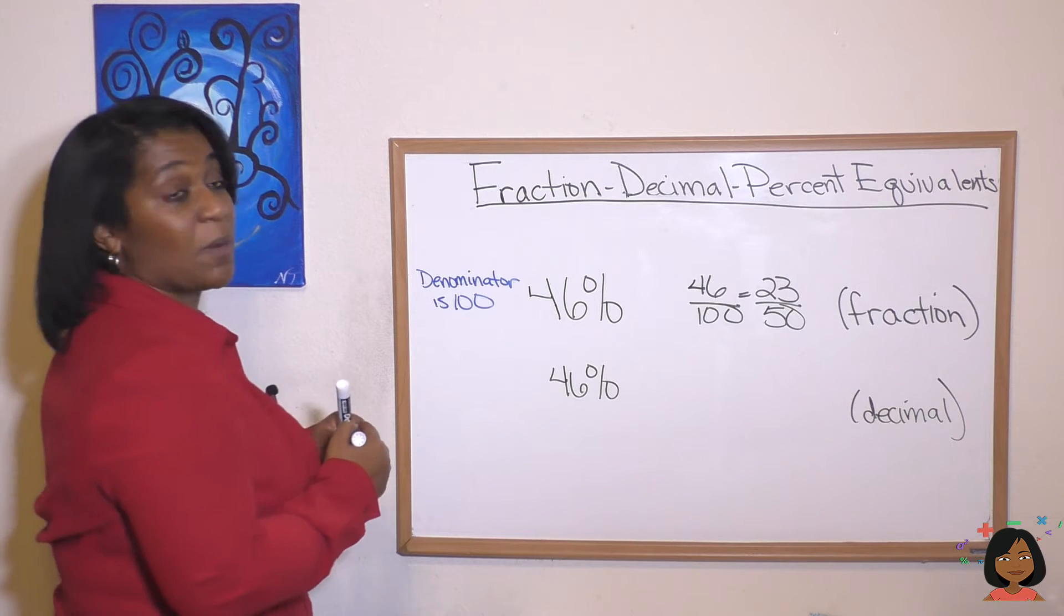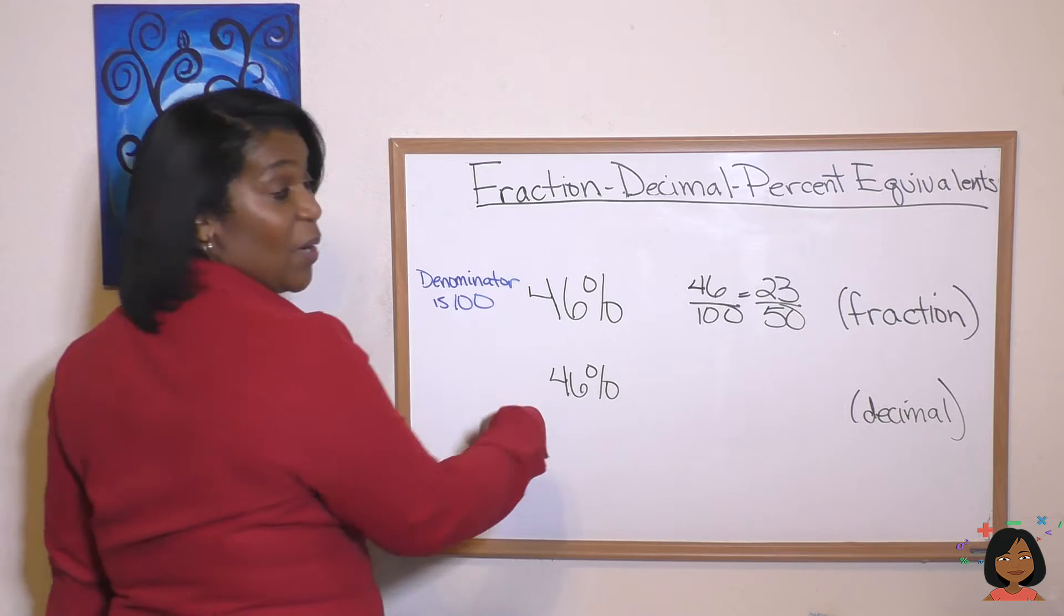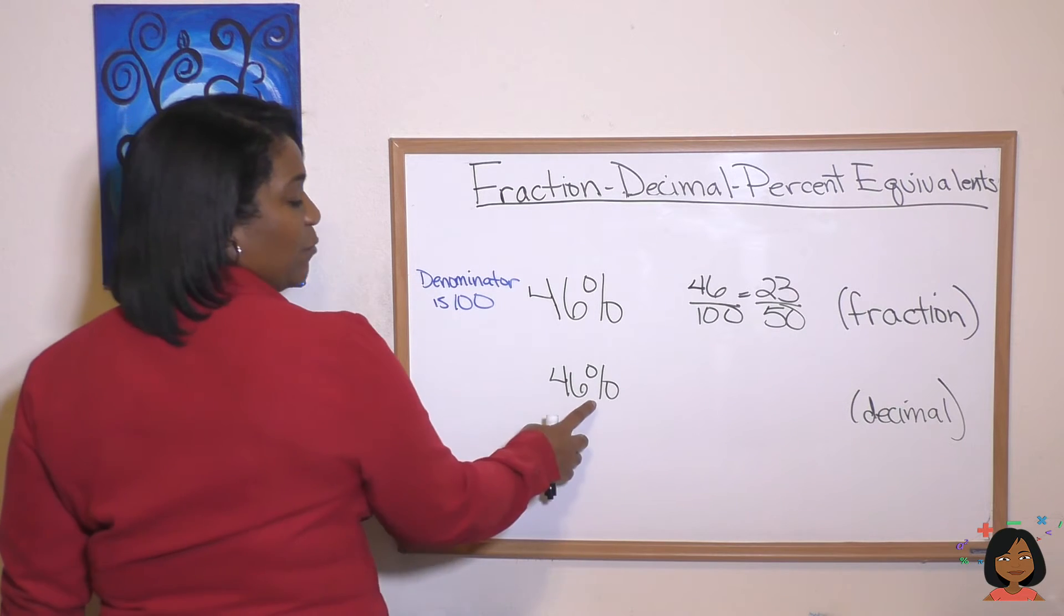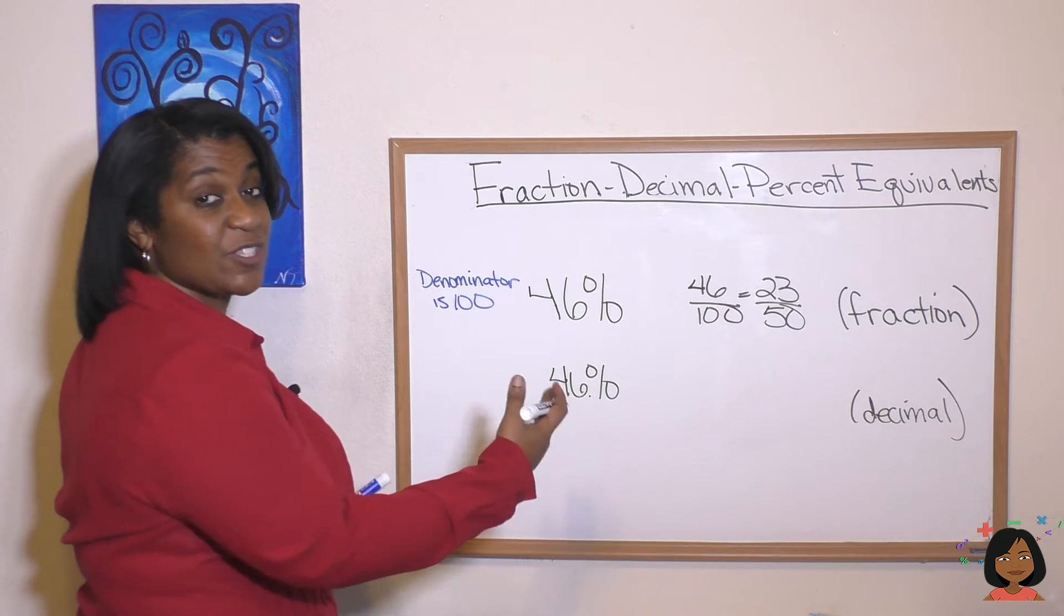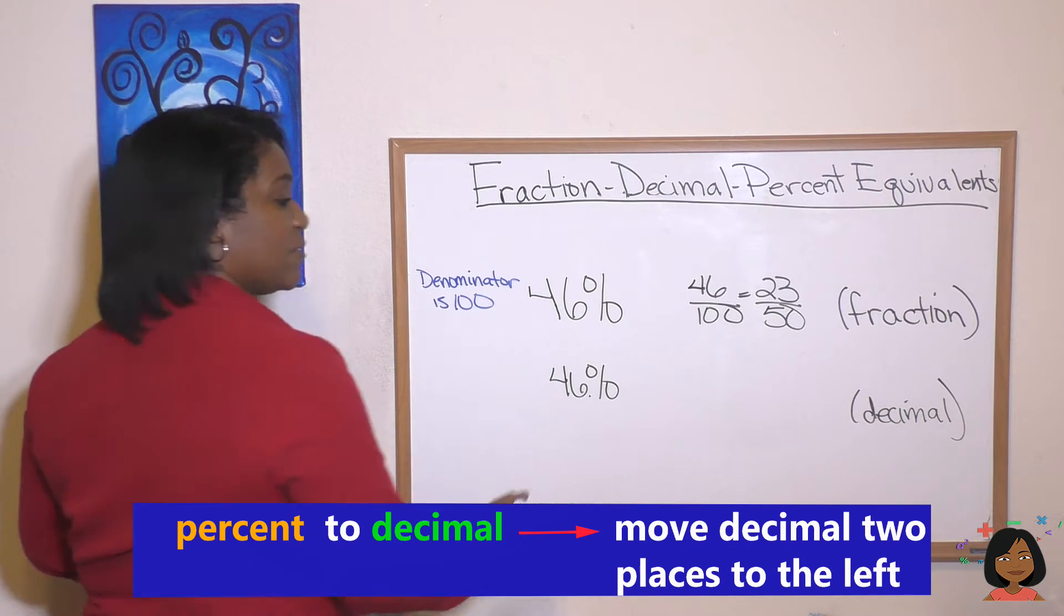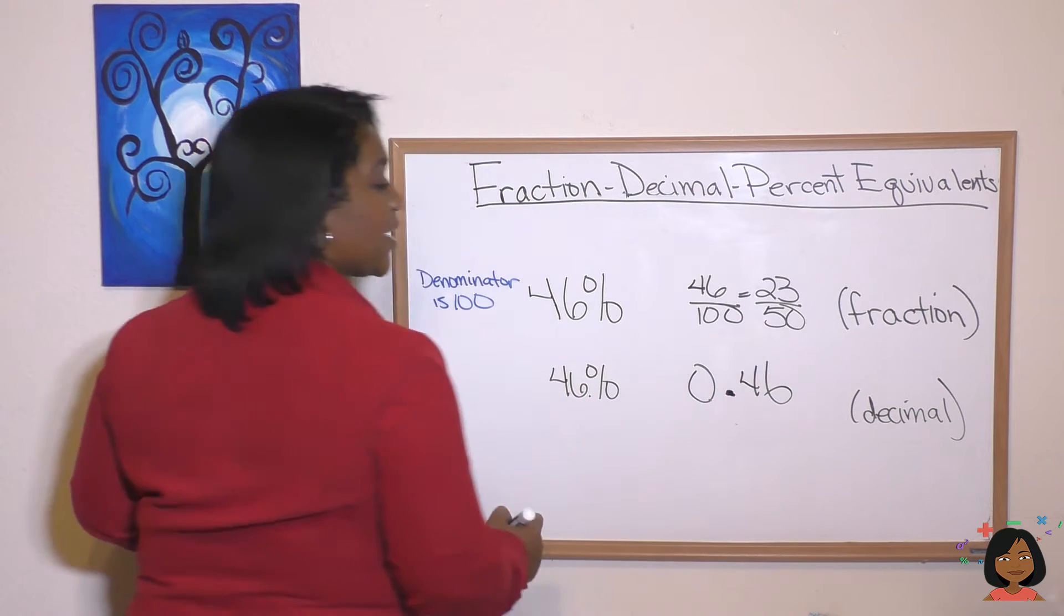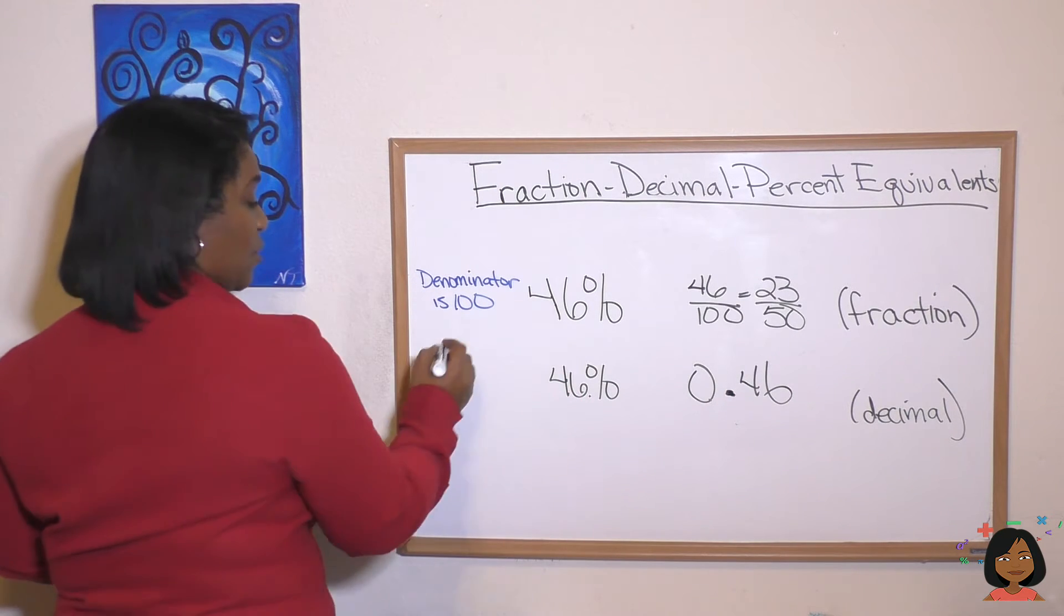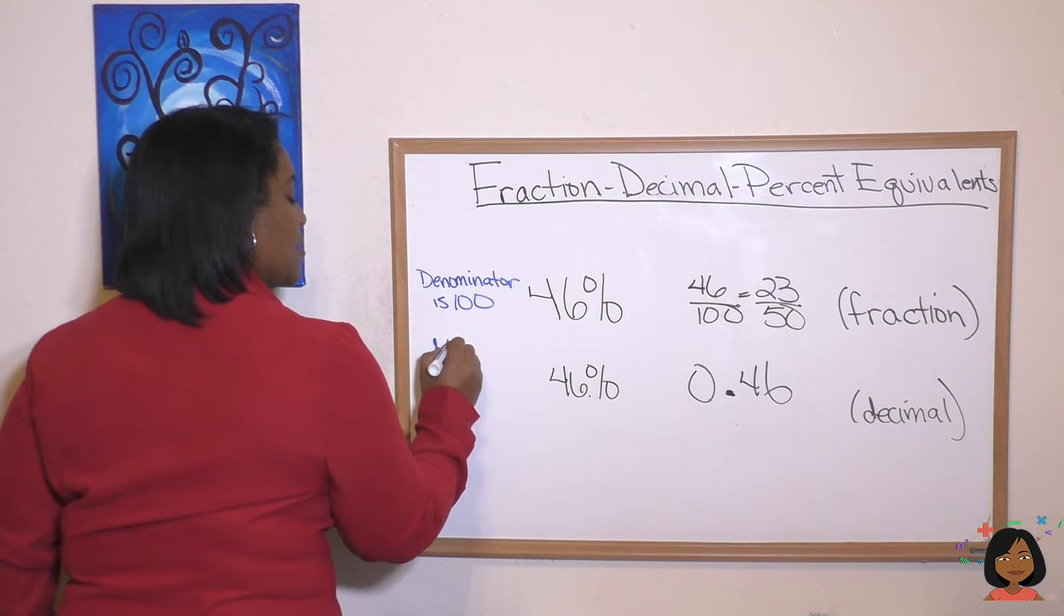Okay. What about decimal? Well we know to get a decimal it's also out of 100. So if we move there's a decimal here. I know you can't see it but it's there. We move it two spaces to the left. That'll give us 0.46. That would be our decimal. So the rule is move two spaces to the left.